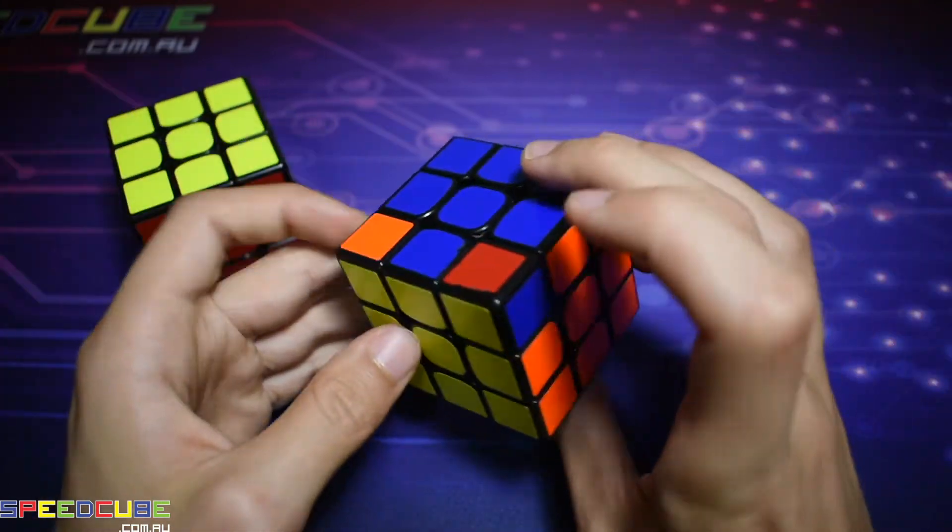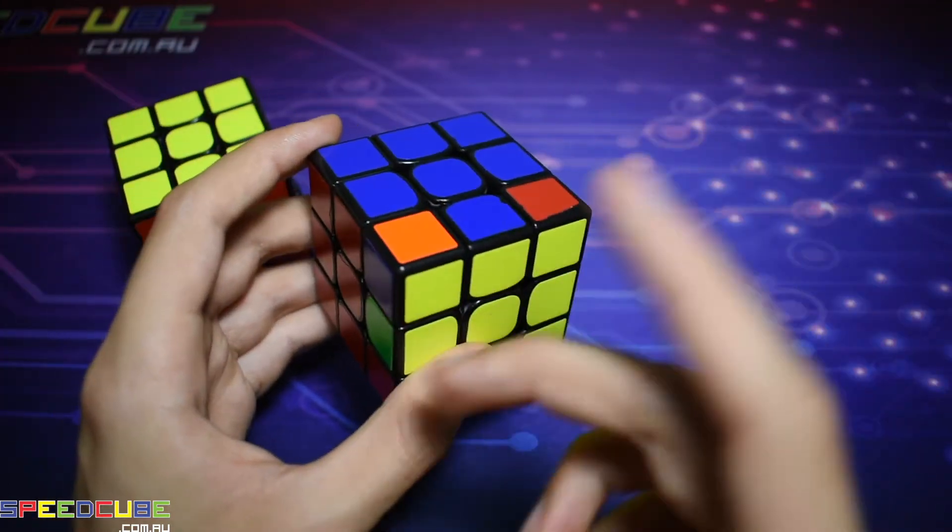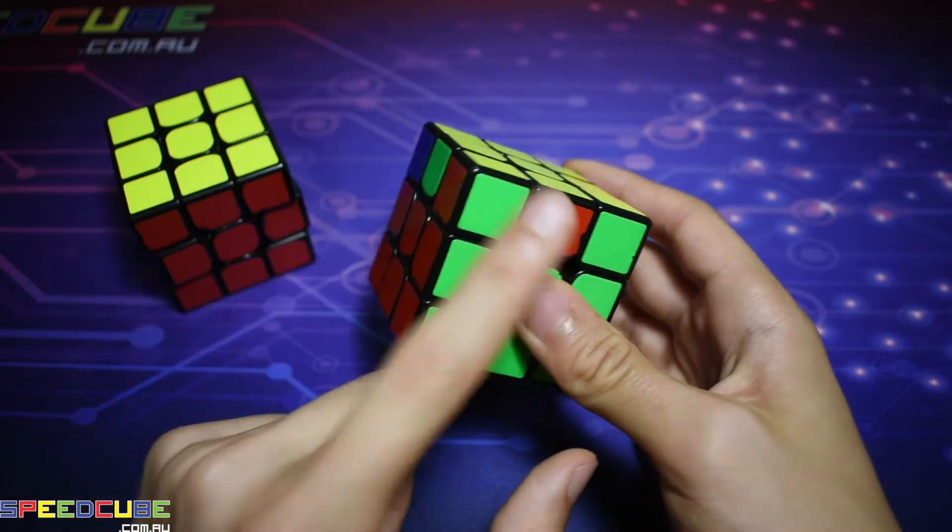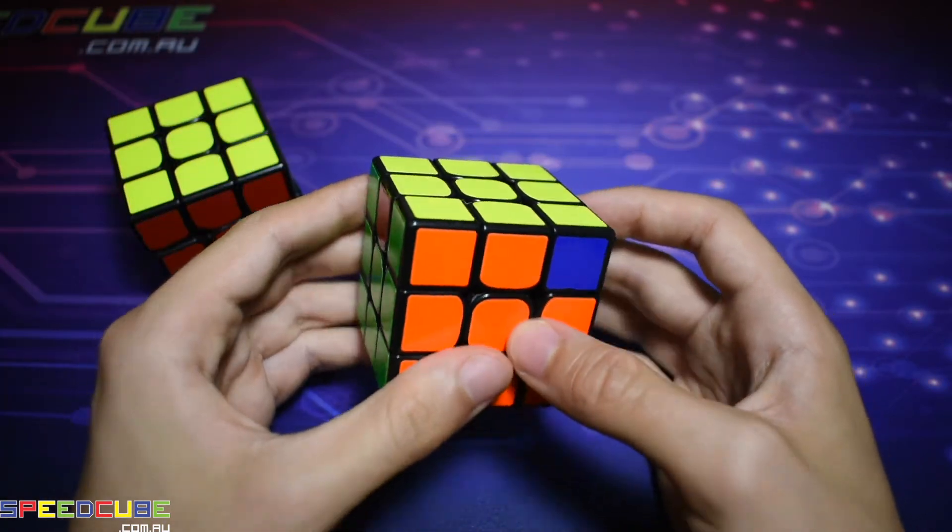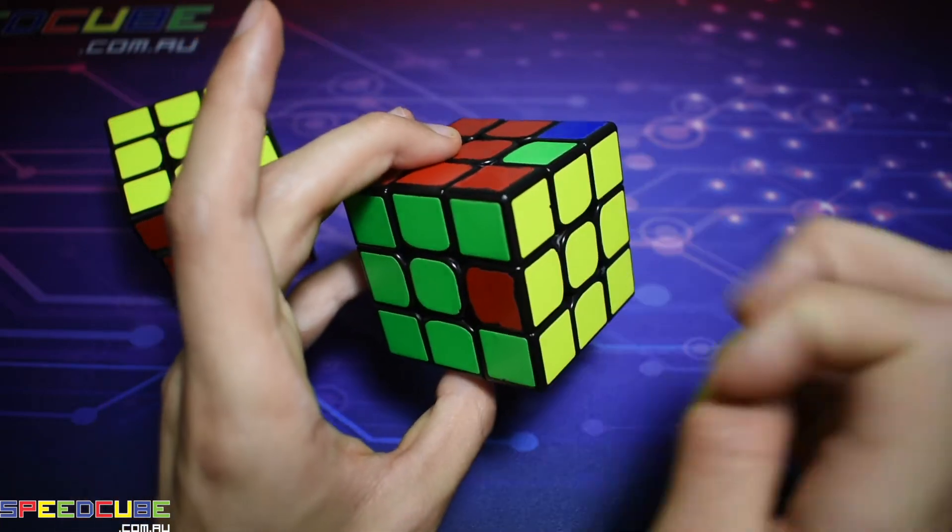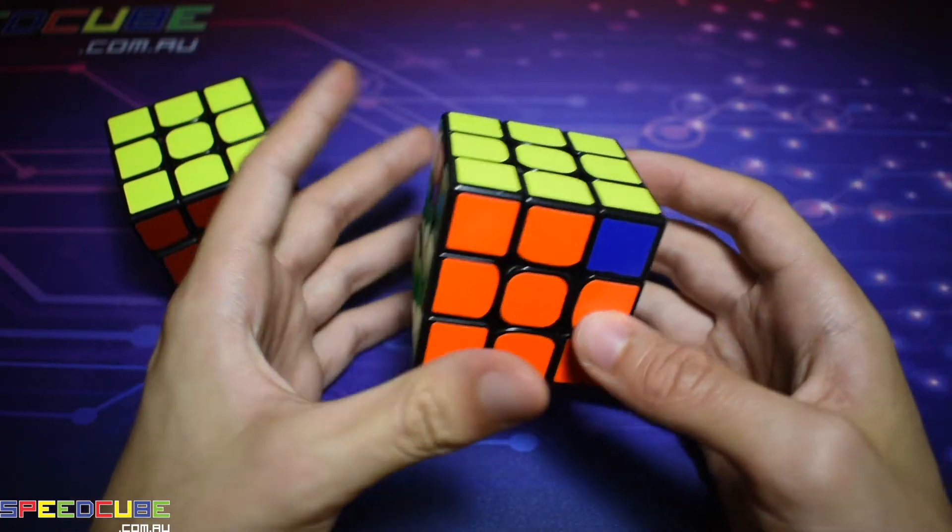And now when the two corners that need to be switched are at the back, you've got this one here and it needs to switch with this one on the left. You want to actually hold it like this with the block in front of you and those two on the back and left and do this.